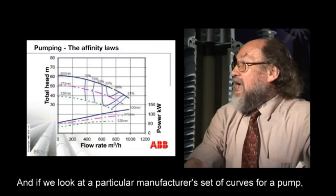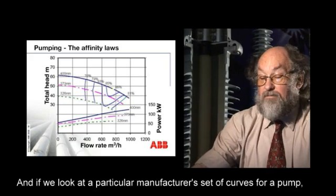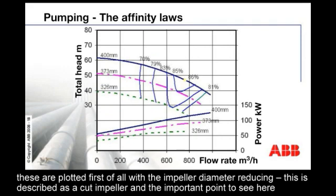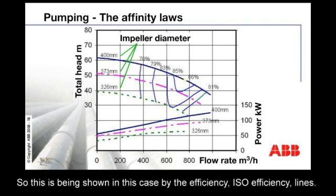Looking at a particular manufacturer's set of curves for a pump, these are plotted first with the impeller diameter reducing — described as a cut impeller. The important point is that the flow-head-volume curves all decline, but the efficiency curves actually tend to reduce as the impeller cut increases, as shown by the ISO efficiency lines.